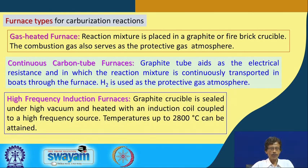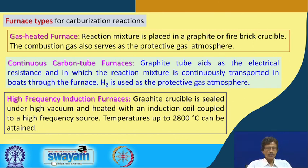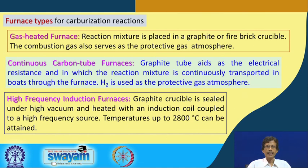The third type is the high-frequency induction furnace, using inductively heated graphite crucibles sealed under high vacuum — no protective gas atmosphere is needed. An electrical induction coil coupled with a high-frequency electrical source is used for heating, and temperatures up to 2800°C can be achieved.